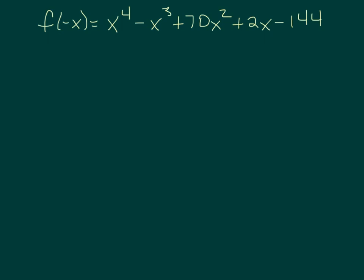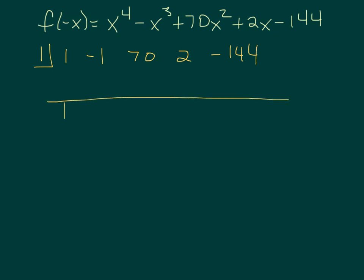To find the lower bound of this same function, we first need to evaluate it for negative x, which is already done here. You'll notice some of the signs are different from the original. We go through and start with 1 again. Bringing it down, multiply, add, multiply, add, multiply, add, multiply, and add. We don't have all the same signs, so 1 doesn't tell us anything about an upper or lower bound here. Let's move on to 2.